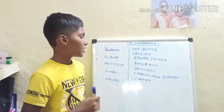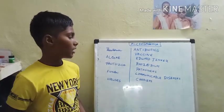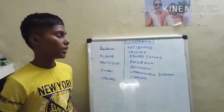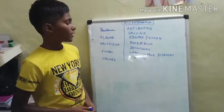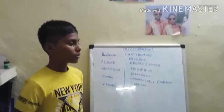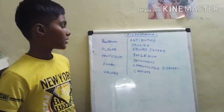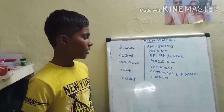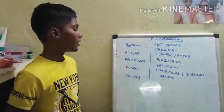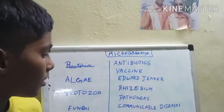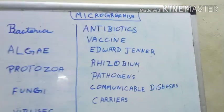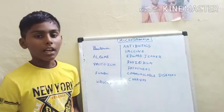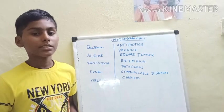Rhizobium, the bacteria present in the soil, converts nitrogen into soluble nitrates and spreads it into the soil. Plants absorb the soluble nitrates and convert them into proteins.